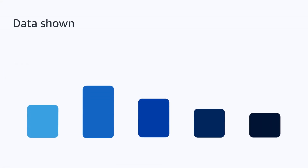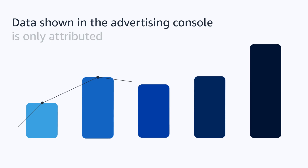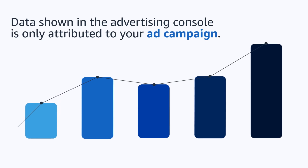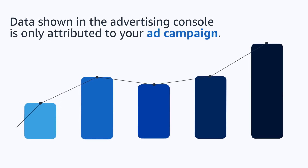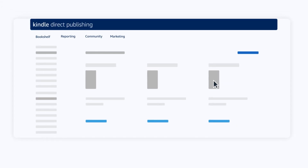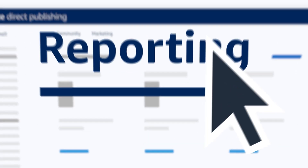Remember that data shown in the advertising console is only what's attributed to your ad campaign — this doesn't account for your organic performance. To review your total performance, sign into the KDP portal and go to the reports tab.